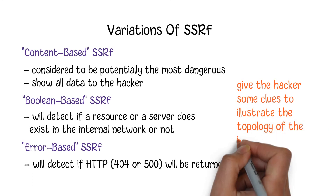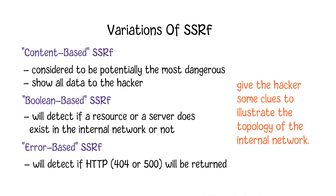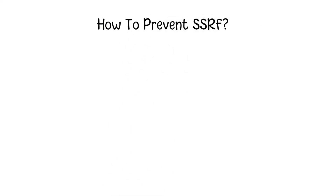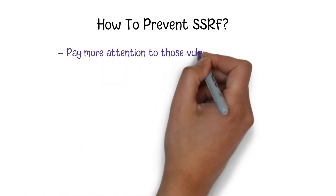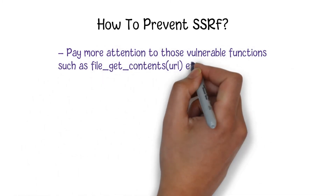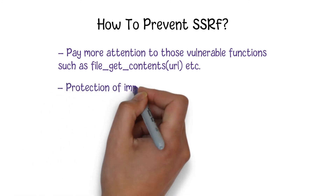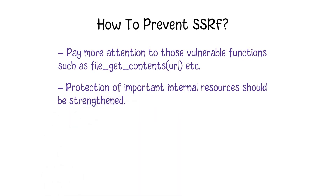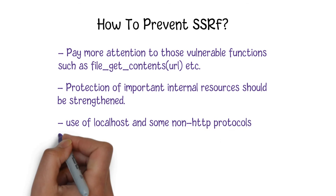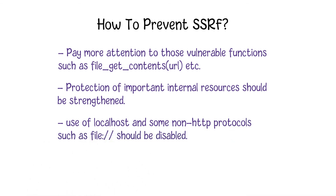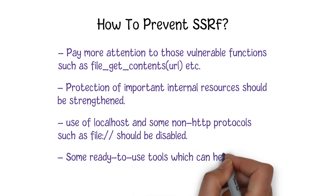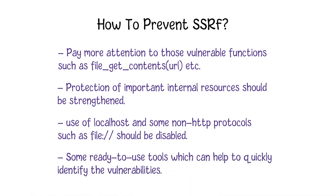Each programming language has vulnerable functions similar to the ones discussed. Developers should be aware of these issues and pay more attention to such vulnerabilities. The protection of important internal resources should be strengthened. Also, the use of localhost and non-HTTP protocols such as file:// or ftp:// should be disabled on servers that may be vulnerable to SSRF attacks. Moreover, there are ready-to-use tools available that can help quickly identify vulnerabilities in a web page or web server.